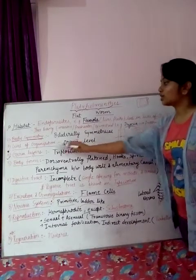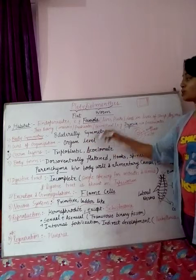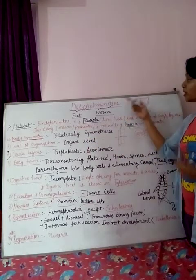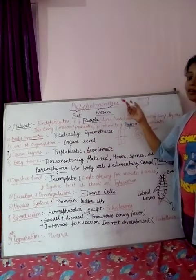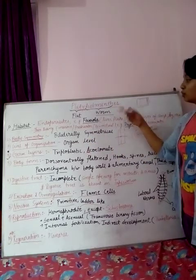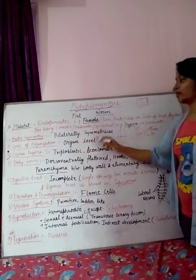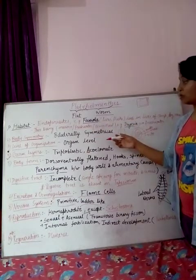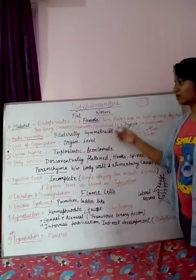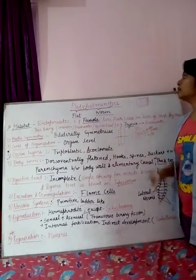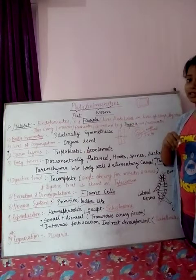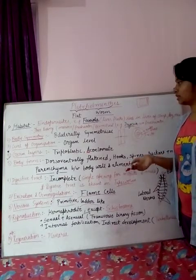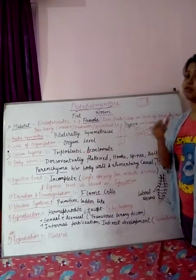Next is the level of organization — organ level — because Platyhelminthes is a more evolved phylum, and in more evolved phyla the organ level of organization is found. Previously we saw tissue level of organization in earlier phyla.